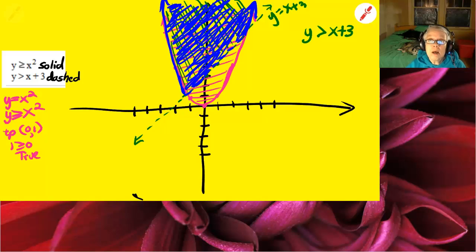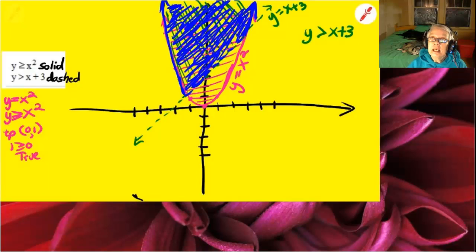The green line, the dashed line, is the line y equals x plus 3. And the pink parabola, the actual line itself, is y equals x squared. And we have graphed a system of nonlinear inequalities.